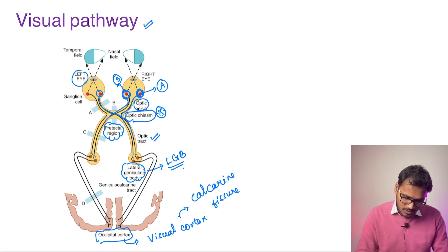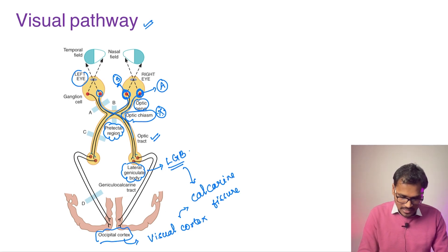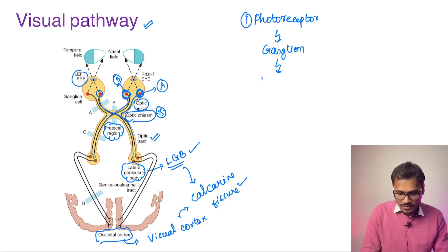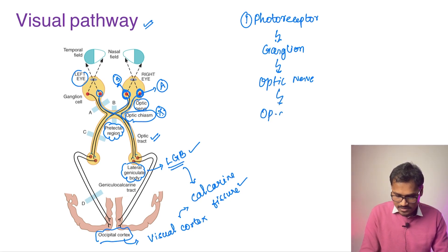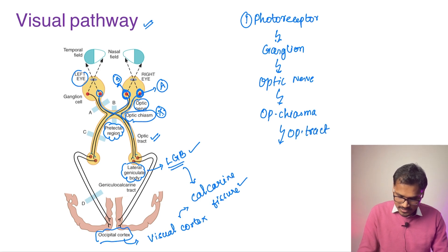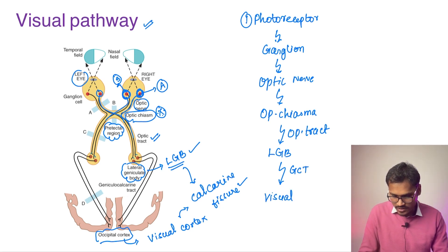The tract from the lateral geniculate body to the calcarine fissure is called the geniculocalcrine tract. So the full pathway is: photoreceptors → ganglion cells → optic nerve → optic chiasma (nasal fibers cross) → optic tract → lateral geniculate body → geniculocalcrine tract → visual cortex in the occipital region.